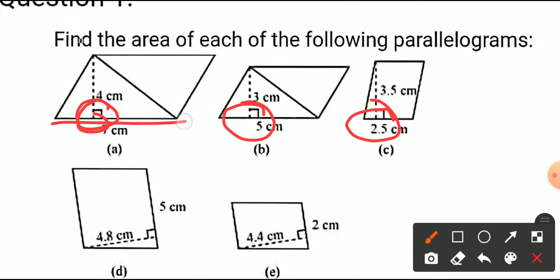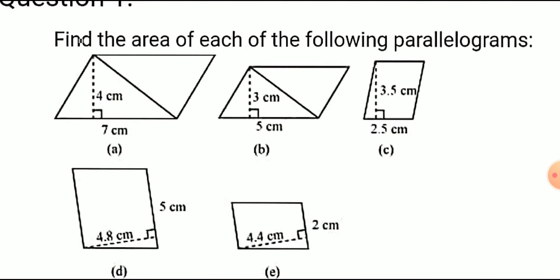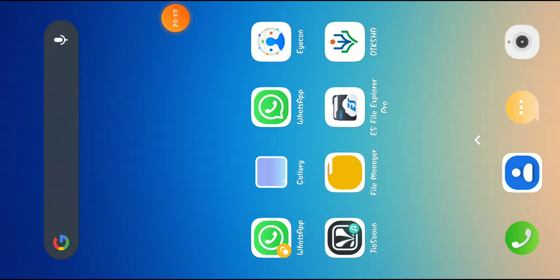One important thing: wherever you see a small box indicating 90 degrees, the line where those boxes fall — where the altitude is drawn — that is the base. We cannot always consider the bottom side as the base. We consider the base to be where the altitude forms or lies. Write this in your copy.